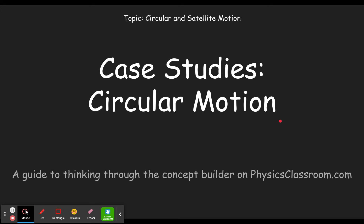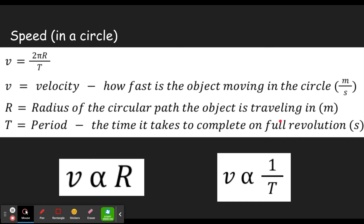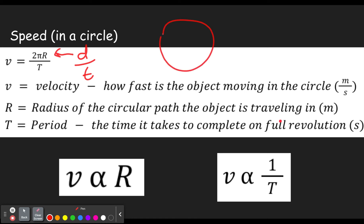Let's get started with the apprentice level, which is called speed — speed in a circle specifically. Average speed is distance divided by time. This takes a particular distance, the circumference of a circle, 2πr, and the amount of time it takes to go around the circle once, which is called the period. The period is a capital T — a specific time, not just a general time. Lowercase t is a general time.